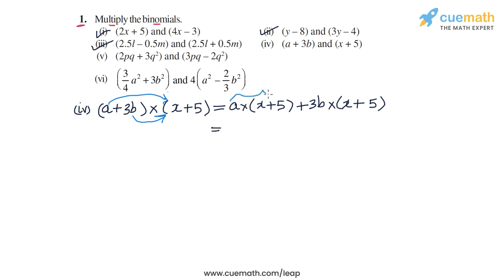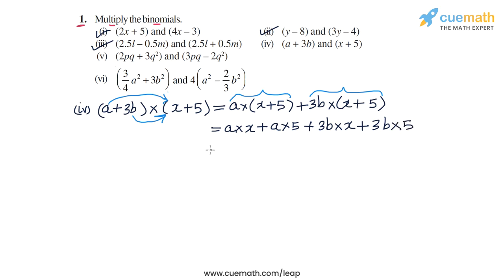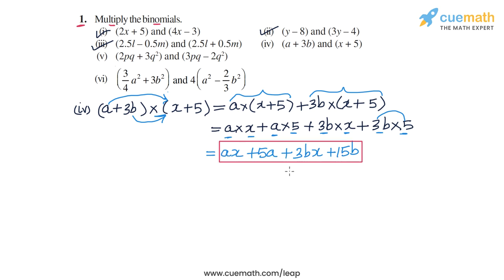We expand each product using the distributive law, giving A into x plus A into 5 from the first product, and 3B into x plus 3B into 5 from the second. So A into x is Ax, A into 5 is 5A, 3B into x is 3Bx, and 3B into 5 is 15B.